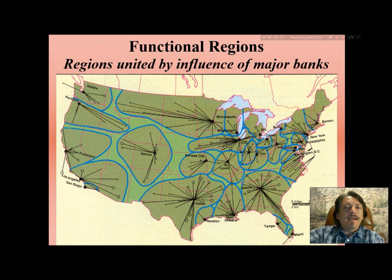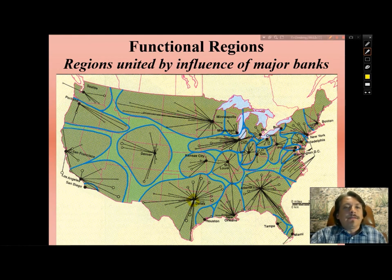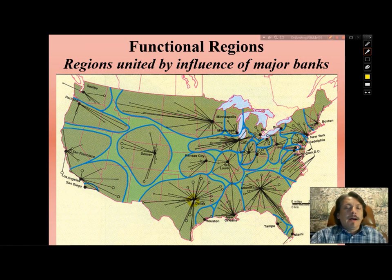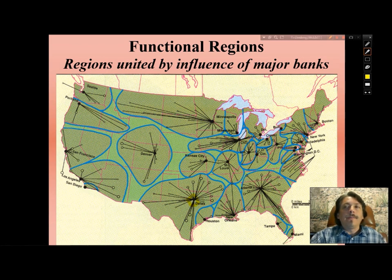For example, in the Dallas–Fort Worth area, oil money fueled a banking empire headquartered there. It has tentacles reaching out in all directions — to Arkansas, Louisiana, all over Texas, Oklahoma, and also the oil-producing section of New Mexico such as Roswell. Banks of lesser prestige operate in a service network area led by these major regional banks. So Roswell operates in the realm of the Dallas banks.